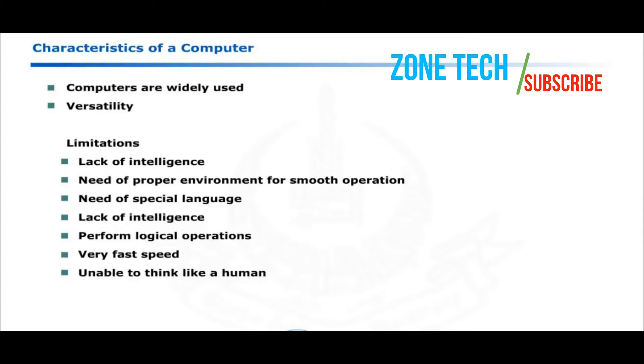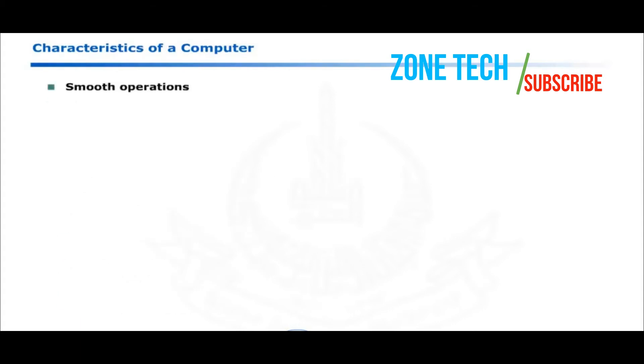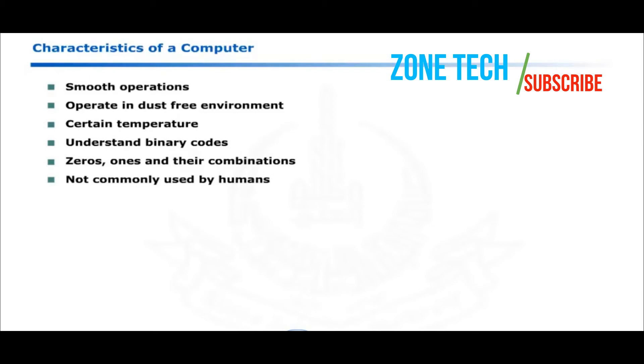Presently, computers cannot tell the fragrance of a flower or have no aesthetic sense. Computers need proper environment for smooth operations. These can only operate in dust-free environment under certain temperature conditions. Computers can only understand binary codes i.e. zeros, ones and their combinations. These codes are not commonly used by humans. Special software interpreters and compilers are used to convert natural languages to computer understandable codes.